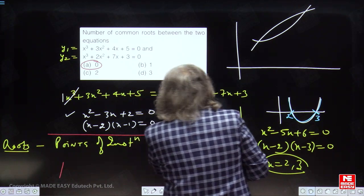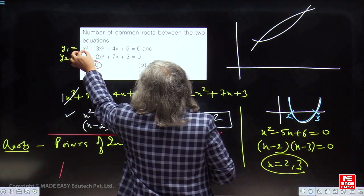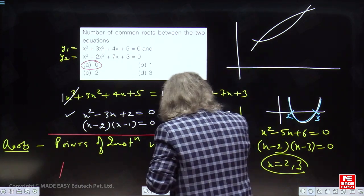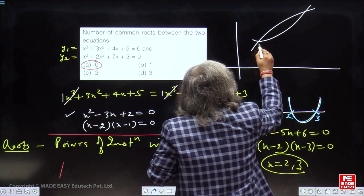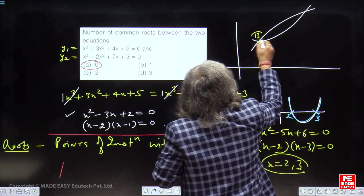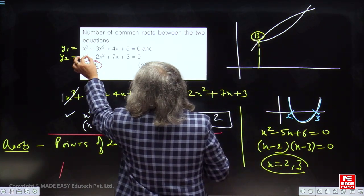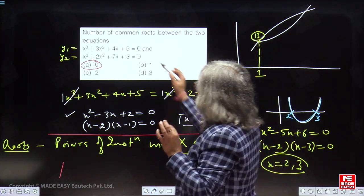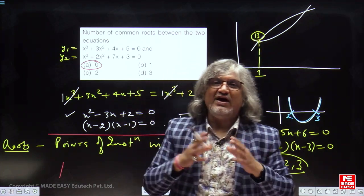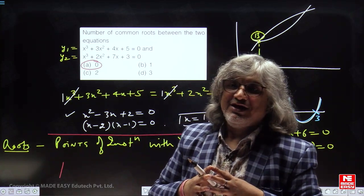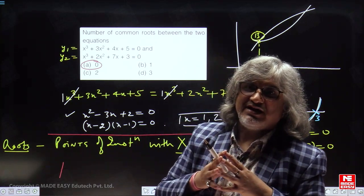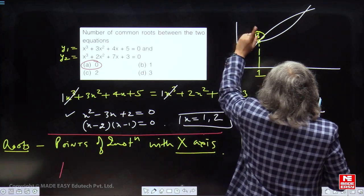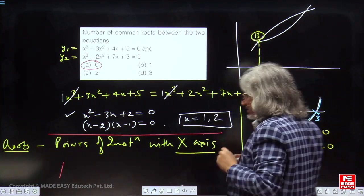If I put x equal to 1 here, 1 plus 3 plus 4 plus 5 that is equal to 13. So, at x equal to 1, this function is giving me value 13. And at this function is also 1 plus 2 plus 7 plus 3, this is also equal to 13. So, both the equations are yielding the same value of y that is equal to 13. So, that means both the functions are intersecting, both the equations are intersecting well above x-axis. They are not intersecting on x-axis. They are intersecting well above x-axis.